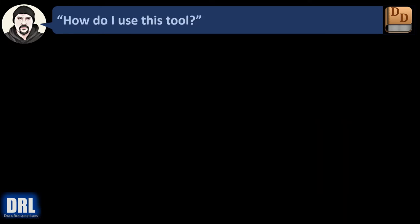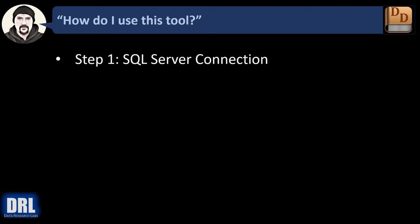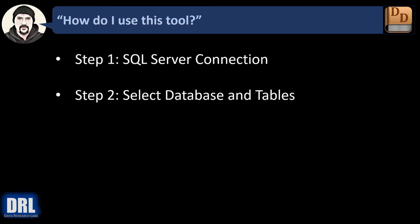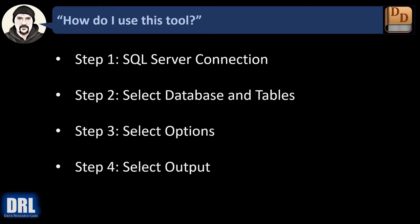So how do I use this tool? Step one is you configure the SQL Server connection — select the server, user ID, login, password, all that good stuff. Step two, select the database, schema, and the tables that you want to analyze for the data dictionary. Step three, select some options. Step four, select the output. And then finally, you run the job and repeat.